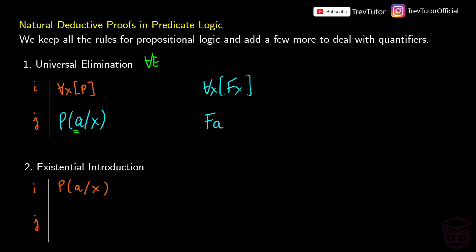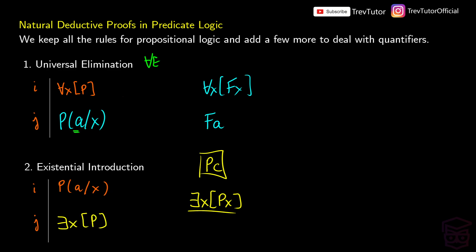Existential introduction works in a similar way. Imagine we know for a fact that we have P(c) in our proof. Because we have at least one thing with property c, we can introduce an existential and say there exists an x such that P(x), since all this requires is that at least one thing has the property P. So if we have a formula where all the x's have been replaced with something a, we can then say there exists an x such that P. This is written as ∃I — backwards E with i for existential introduction.